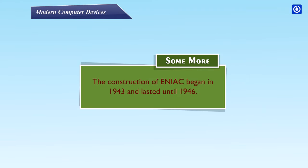The construction of ENIAC began in 1943 and lasted until 1946.